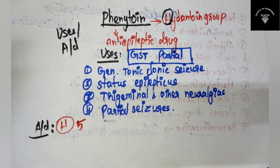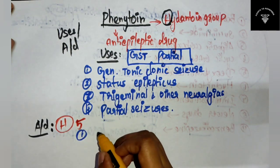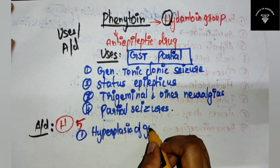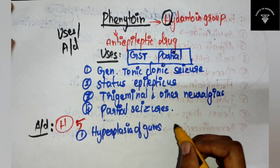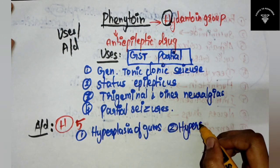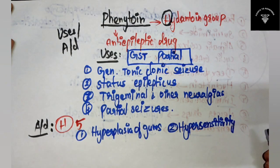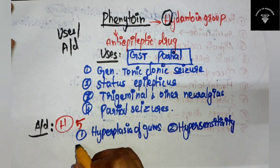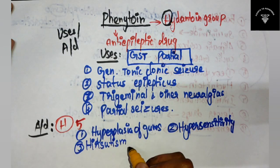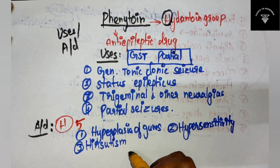First H is hyperplasia of gums. Second H is hypersensitivity reactions. Third H is hirsutism - that is abnormal growth of hair on the women's face or body.